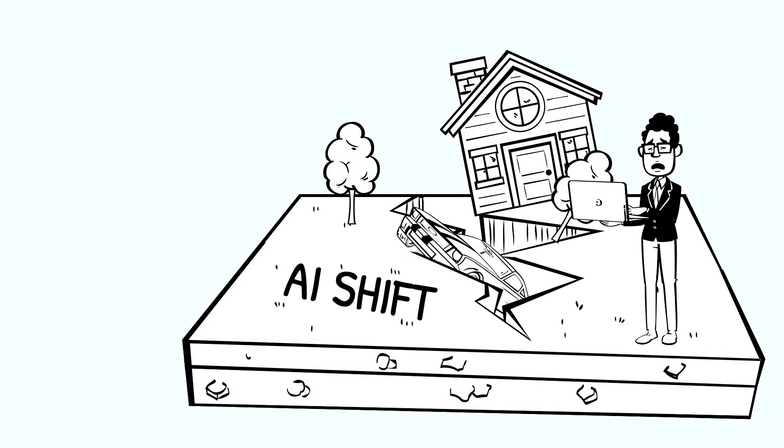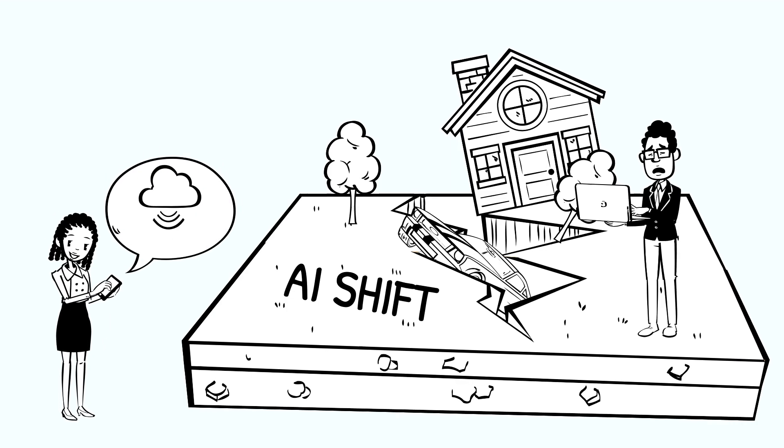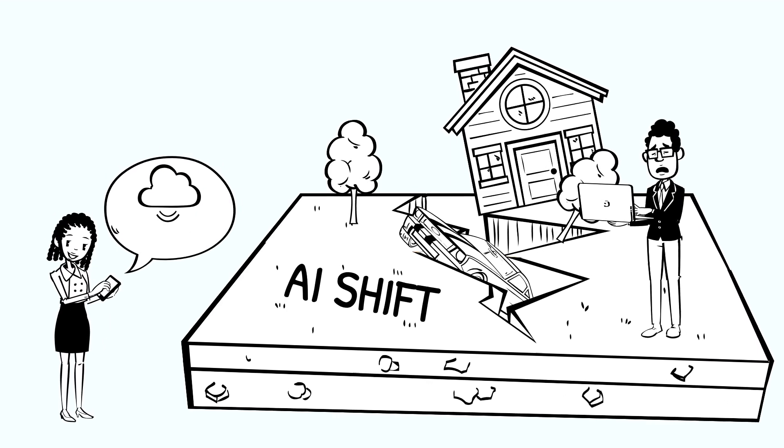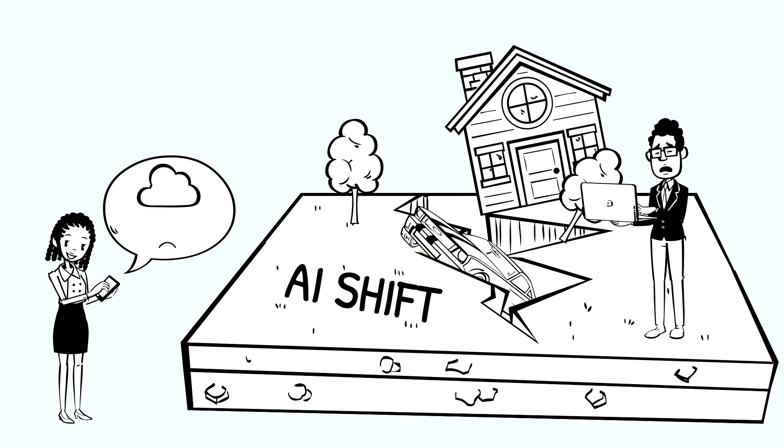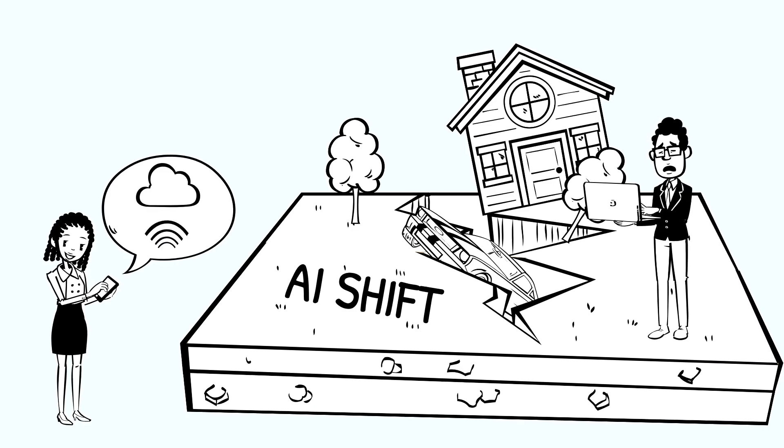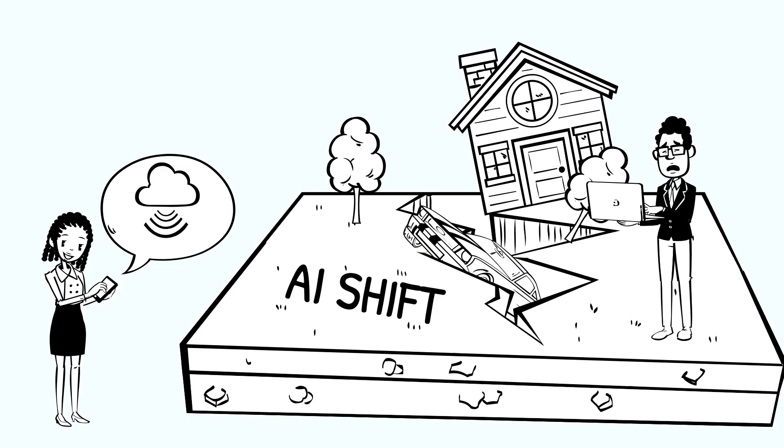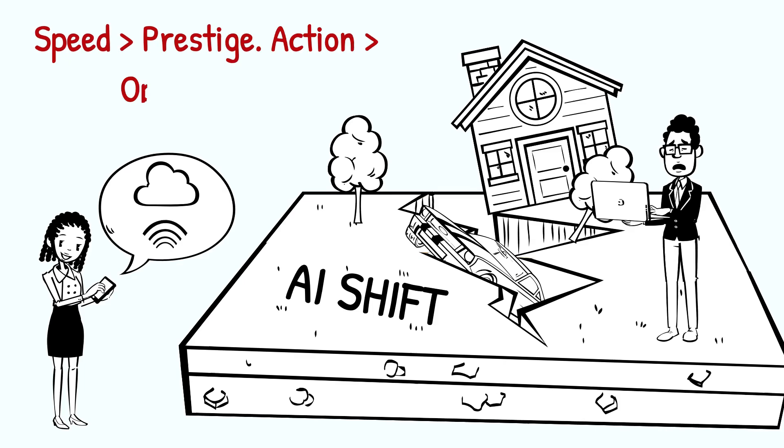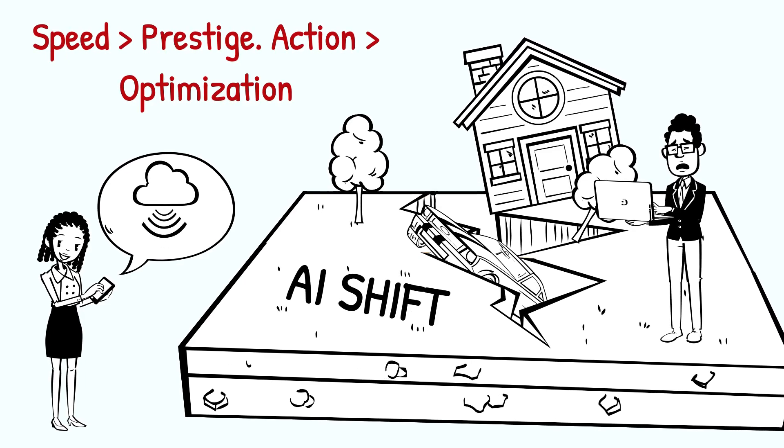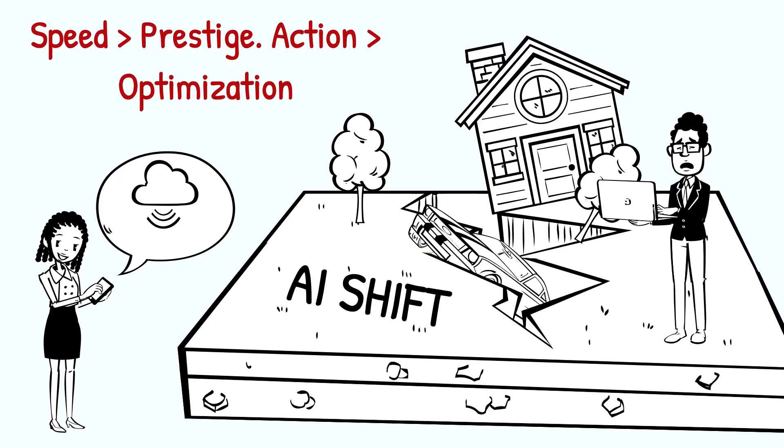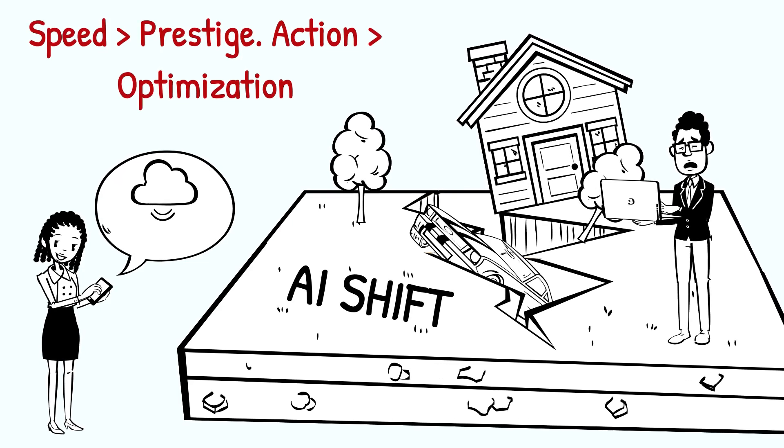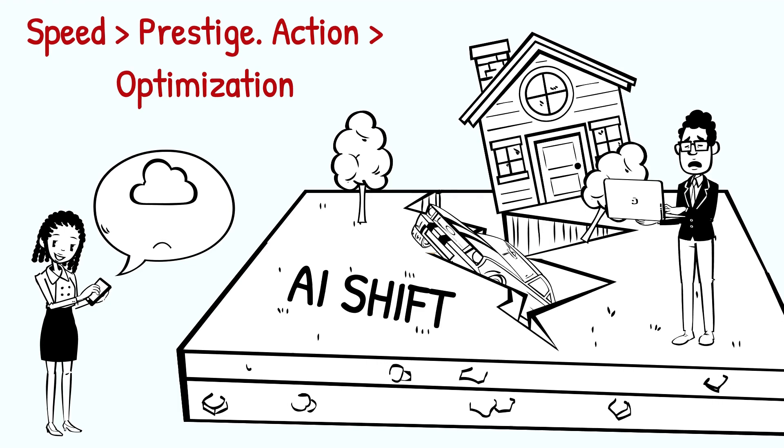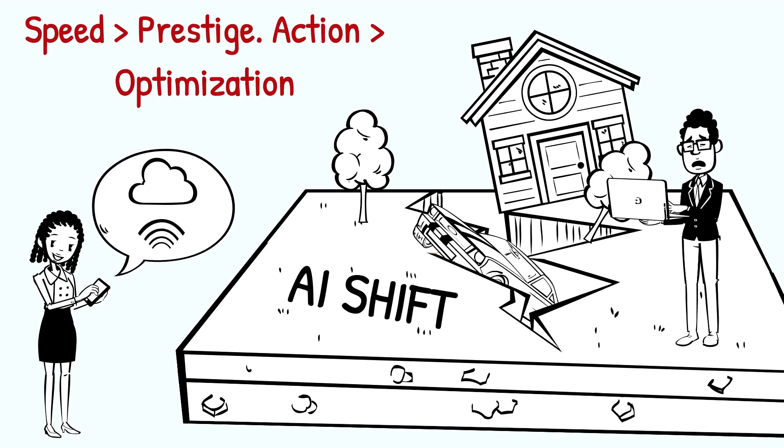Step one, stop waiting for the old world to come back. It won't. AI isn't a trend, it's a tectonic shift. If you're still optimizing your resume for keywords instead of outcomes, you're behind. The winners aren't those with the best degrees, they're the ones who adapt fast. You don't need to be a genius, you need to be agile. Drop a comment if you've pivoted in your career and how it worked out.